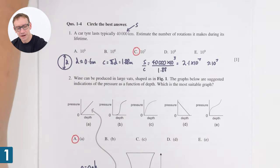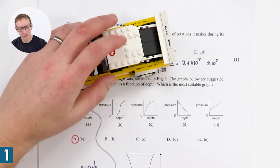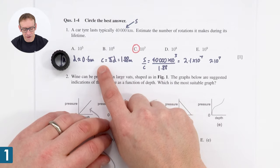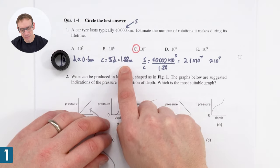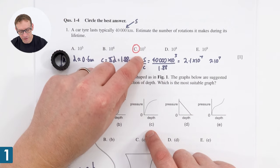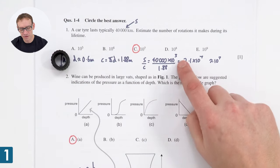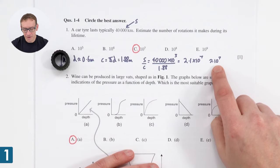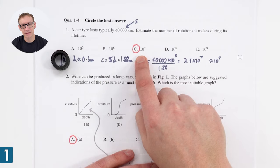The first few questions were multiple choice. The first one: we've got a car tyre. As a car is driving along, it might last for 40,000 kilometres — how many rotations does it make? I estimated the diameter of a car tyre is about 0.6 metres, maybe between 0.5 and 0.7. The circumference is pi d, which is about 1.88 metres. Total distance 40,000 times 10³ metres divided by 1.88 metres gives about 2.1 times 10⁷ rotations. So the order of magnitude answer is 10⁷.